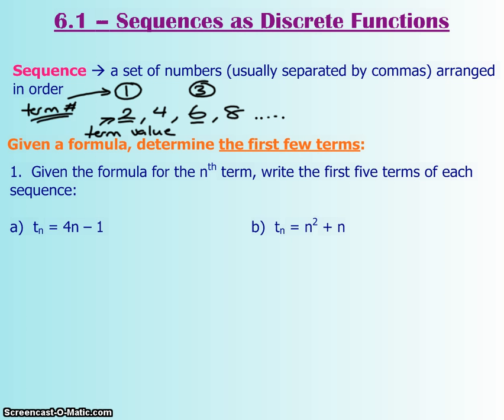Your term number is your independent variable. So this would be what would go along the horizontal axis and notice that this is where the discrete function comes in.